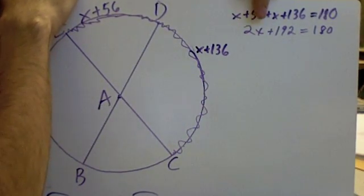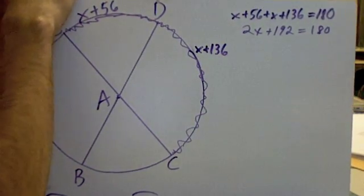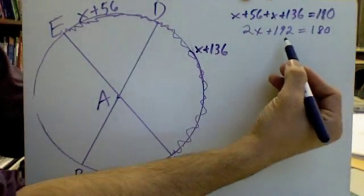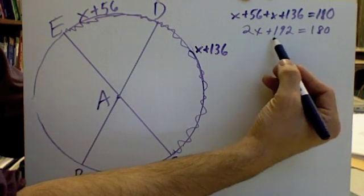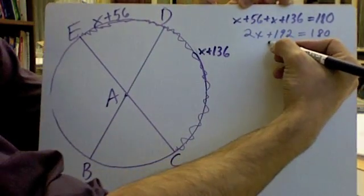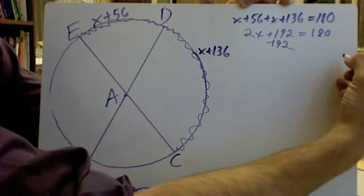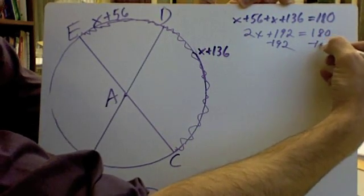Moving right along, I need to get X alone. Well, there's this 2 on this side, there's also this 192, they both need to go away. I need to isolate X. So to do that, I'm going to first get rid of this 192. Since it was being added, I have to do the opposite. I'll subtract it from the left side of the equal sign. And then if I do it to the left, I have to do it to the right. So I'm going to subtract 192 here as well.